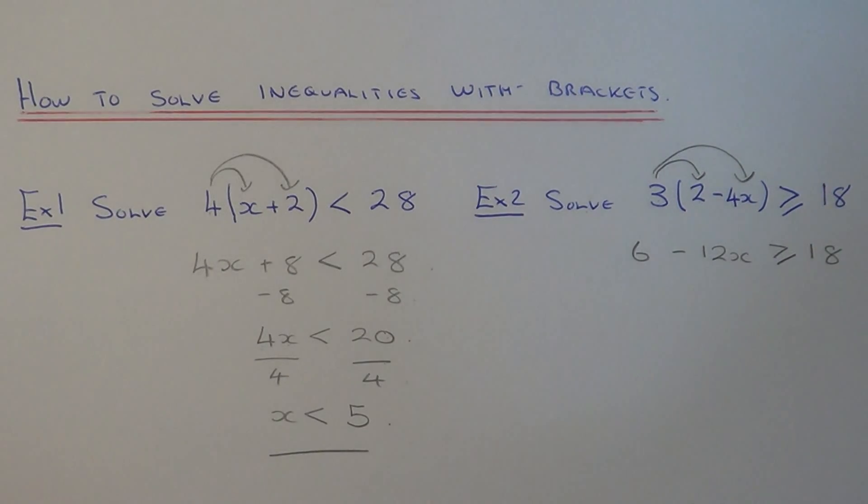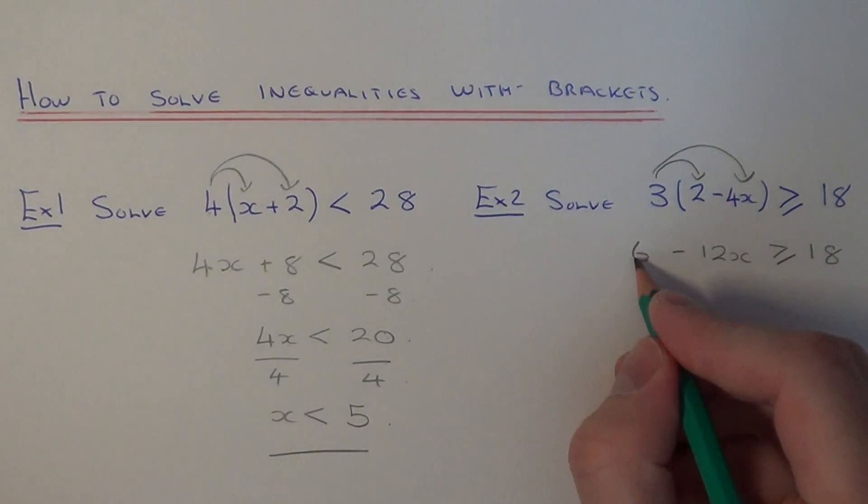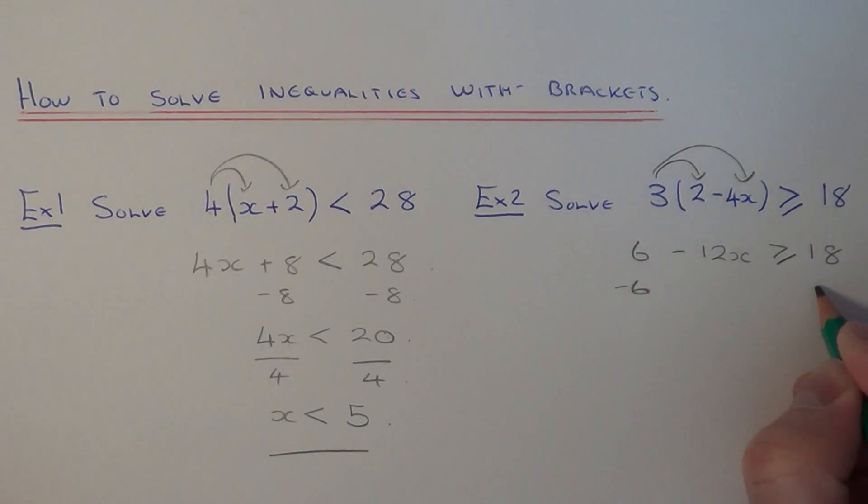So again we just need to do the opposites now to find out what x is. Let's get rid of the plus 6 first of all by subtracting 6 from both sides. So this will give us minus 12x is more than or equal to 18 take away 6 is 12.